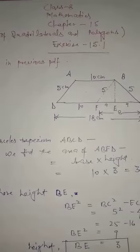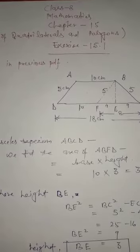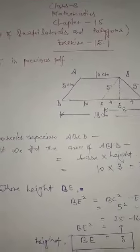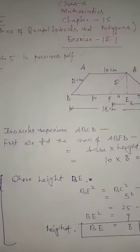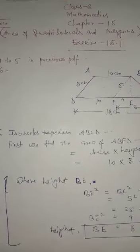Today I am going to explain exercise 15.1 of mathematics from chapter 15, area of quadrilaterals and polygons. I have already explained questions 1 to 5 in previous videos, so I am going to start from question number 6.